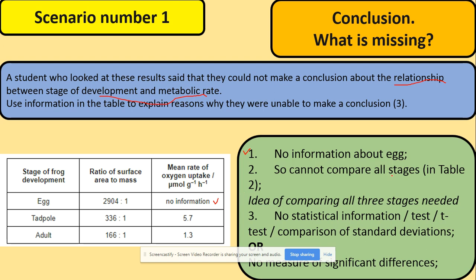In this situation, why can we not use any conclusions? Because we don't have information. They cannot compare all stages because we've got egg, tadpole, and adult, and there is no comparison. What's missing here? We've got no information here.